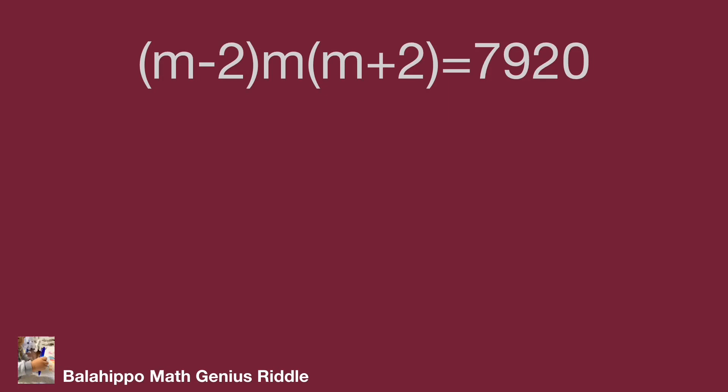Let's check the next one. When m equal to 20, substitute m by 20 into these equations: m minus 2 equal to 18 and m plus 2 equal to 22. The equation becomes 18 times 20 times 22 equal to 7920. Bingo!